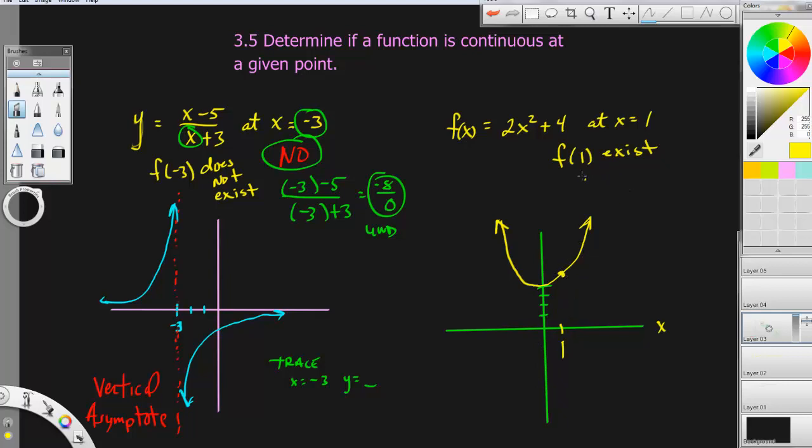In fact, we'll go ahead and do it real fast. f of 1 would equal 2 times 1 squared plus 4. Just to demonstrate how simple this is, 1 squared is 1 plus 4. So that's 2 plus 4, which equals 6. So f of 1 equals 6.